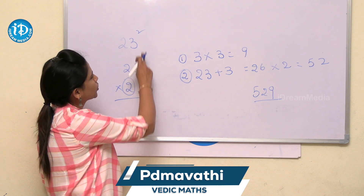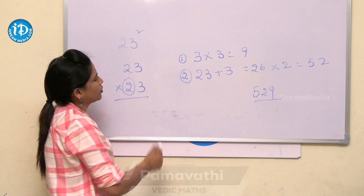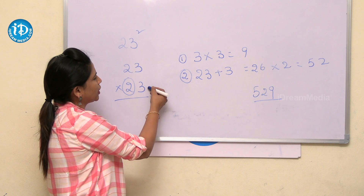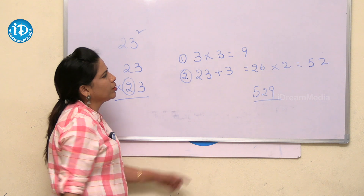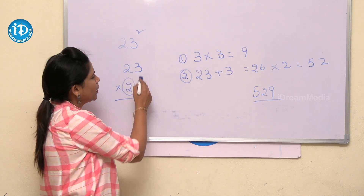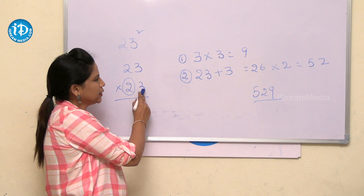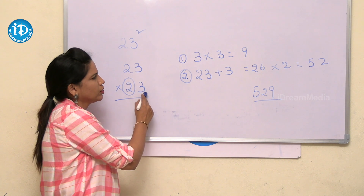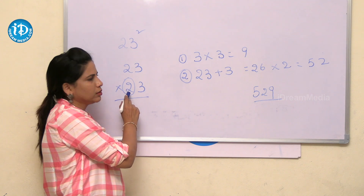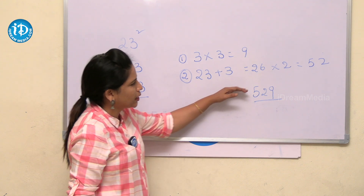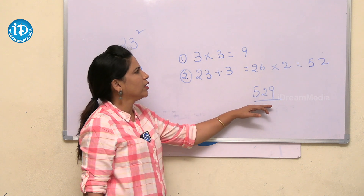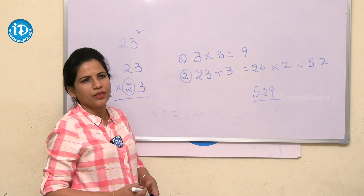To explain 23 square once again: 23 into 23. The first step is the unit digit multiplication — 3 into 3 becomes 9. In the second step, 23 plus the unit digit 3 becomes 26, and 26 into 2 — the tens digit — gives 52. So the answer is 529.